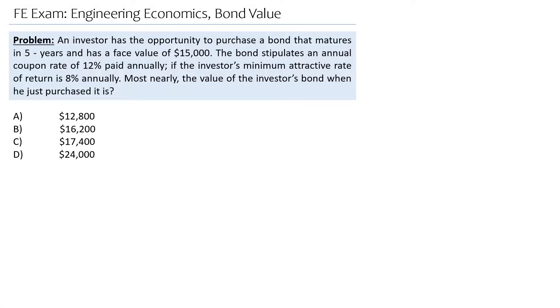Welcome back everybody. Today we are discussing an engineering economics problem related to bond value. The problem is: an investor has the opportunity to purchase a bond that matures in five years and has a face value of $15,000. The bond stipulates an annual coupon rate of 12% paid annually. If the investor's minimum attractive rate of return is 8% annually, most nearly the value of the investor's bond when he just purchased it is.